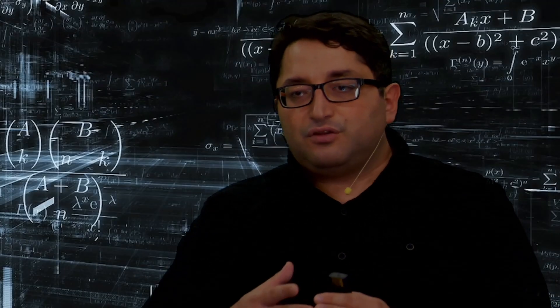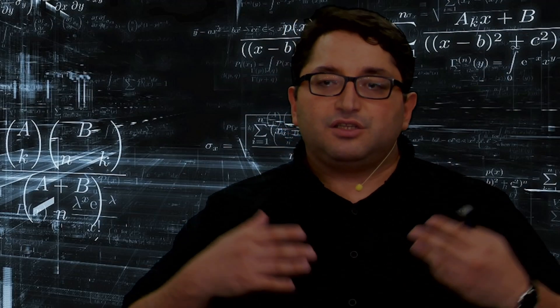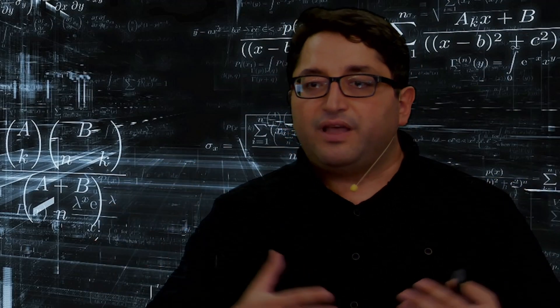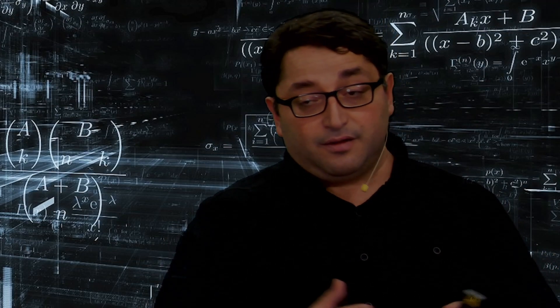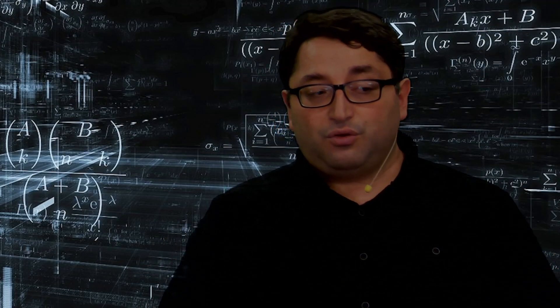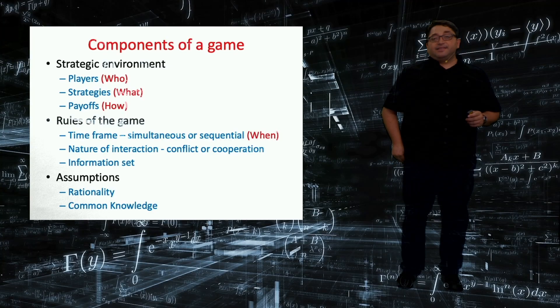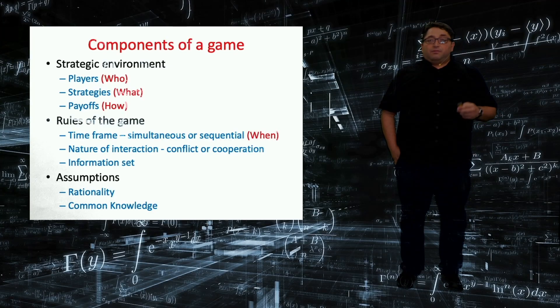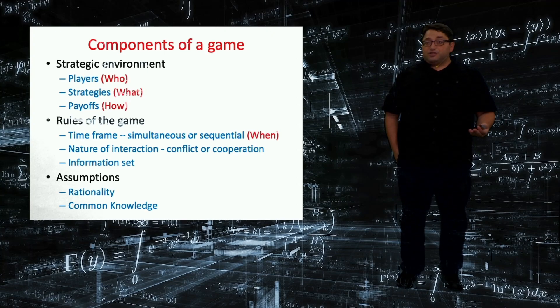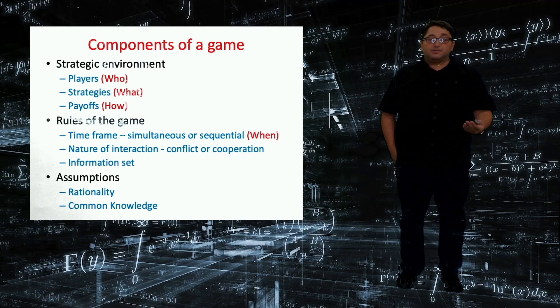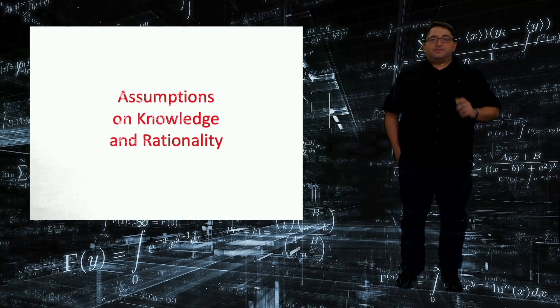And information set—this is at each instance of the game, how much would a particular player know about the moves of the other players, the types of other players, and so on. And finally, assumptions. I mentioned about rationality, and in some solution concepts, we might need stronger assumptions such as common knowledge of rationality. In the next lecture, I will talk about these basic assumptions on knowledge and rationality.